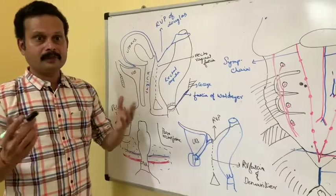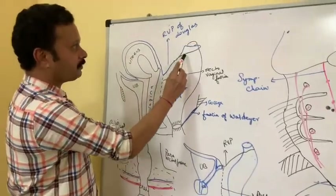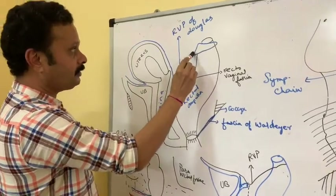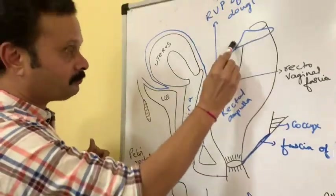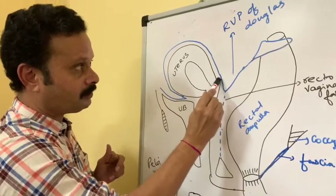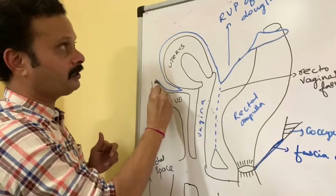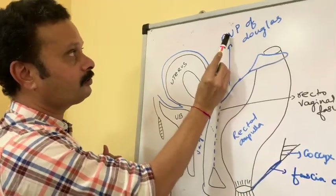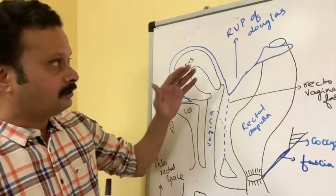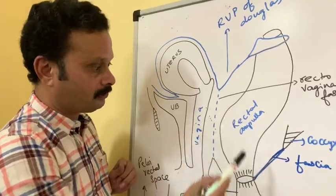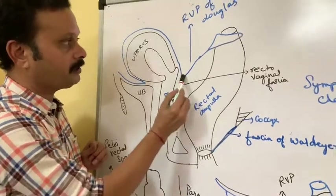Coming to the peritoneal relations in females, the peritoneal fold covers the upper one-fourth of the posterior wall of the vagina, then along the posterior wall of the uterus, reflecting onto the urinary bladder. This peritoneal reflection is called the rectouterine pouch of Douglas. The bottom of this pouch is around 5.5 centimeters above the anal opening, or 7.5 centimeters above the vaginal opening in a female.